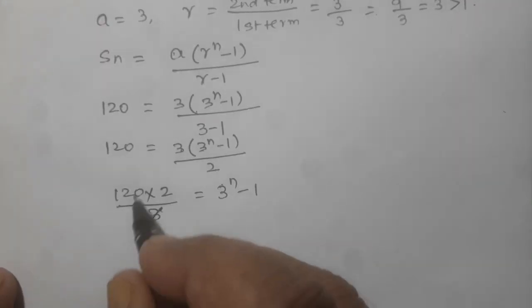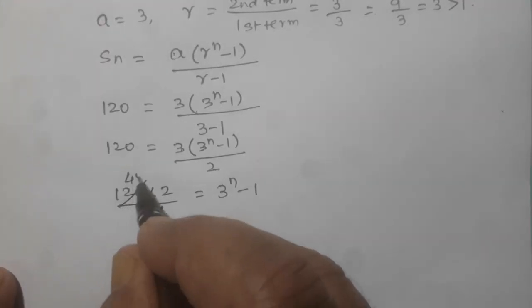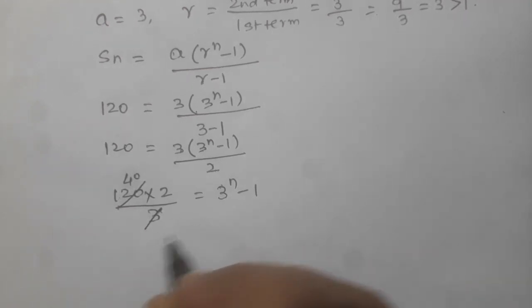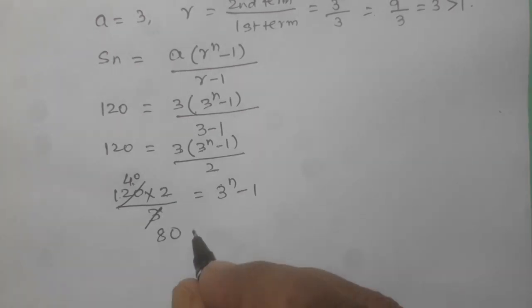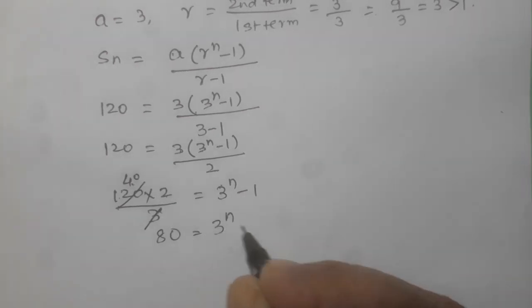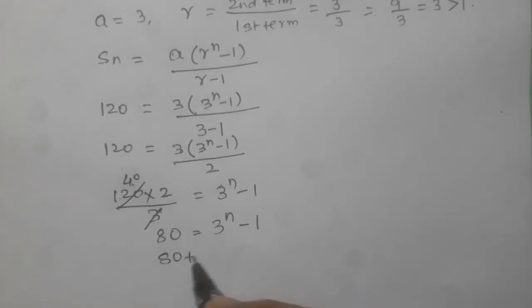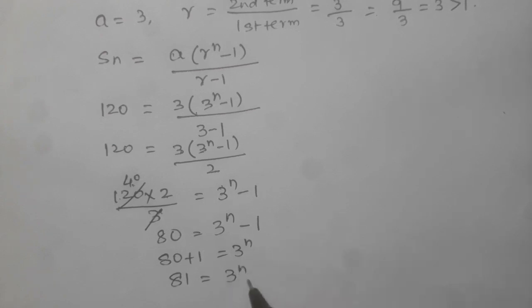Now this 3 will be cancelled by 40, 3 fours are 12, so it will be 80, 20 into 2, 80 equal to 3 power n minus 1. Now this 1 will be transposed to this side, so 80 plus 1 will be 3 to the power n. 81 will be 3 to the power n.